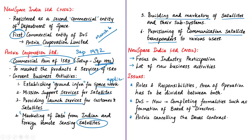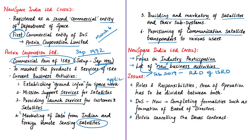New Space India Limited was approved by the cabinet in February 2019 to commercially exploit the R&D work carried out by ISRO. It is expected to focus on industry participation and all stakeholders associated with industrial activities related to space. It was established because new business activities are emerging such as customer satellites, spin-off technologies, industry participation, production partners, ground stations, and satellite data sales. However, the roles and responsibilities between Antrix Corporation and New Space India Limited are yet to be divided and finalized.